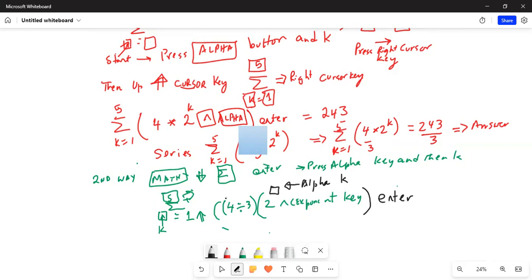Remember what's happening is here, inside the parenthesis 4 divided by 3, then another parenthesis 2 exponent key. Put alpha k over here, enter. And then enter. Already you have indicated you want to sum from k equal to 1 to 5. And out comes your result.